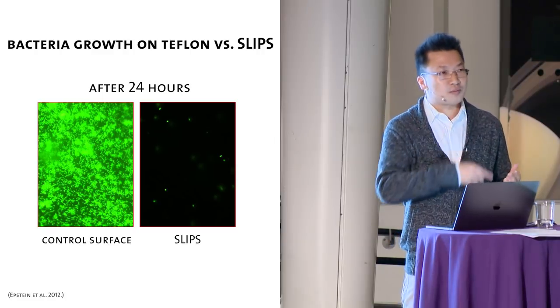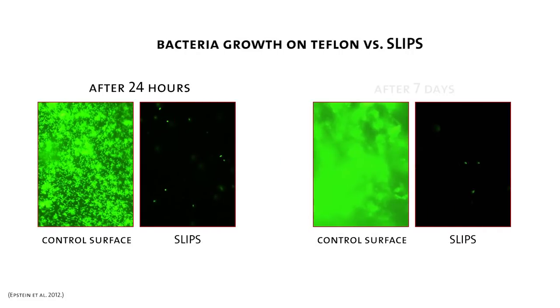Let's do something more extreme. Let's keep doing this experiment for up to seven days. On the control surface, you can't even see individual bacteria because what happened is these individual bacteria connect together to form a three-dimensional community of what we call a biofilm. There are countless bacteria. You can't even map them individually. But on slips, it's still fairly clean. It's just antifouling.